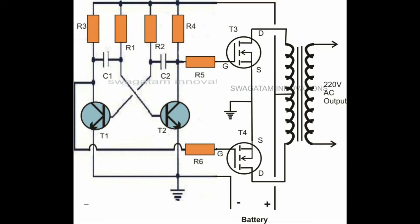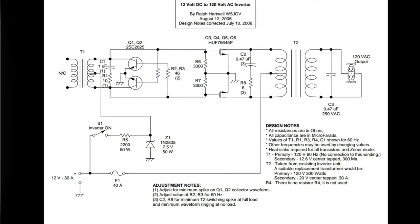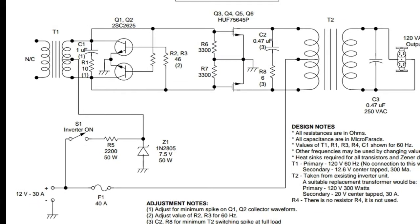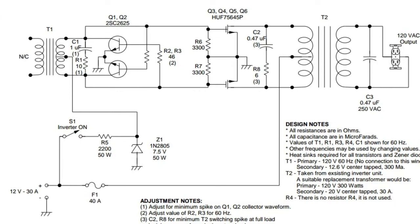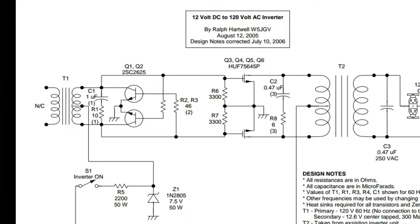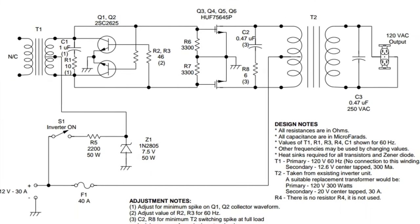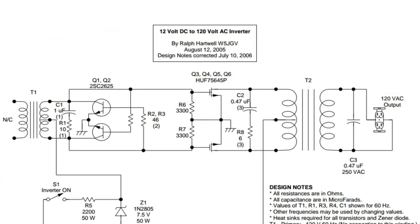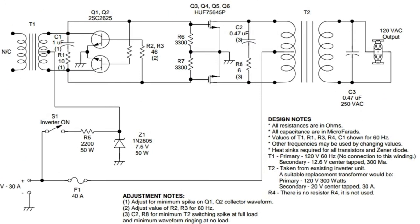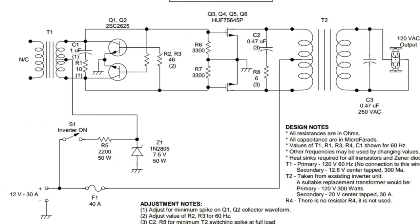But this multivibrator inverter is a voltage-based inverter because if your voltage is 12 volts, then your multivibrator is working. If your voltage is lower than 12 volts, then your inverter stops working. But this circuit is not a voltage-based inverter circuit; this is a current-based inverter circuit.